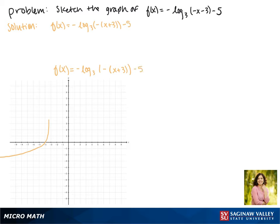Now since we're subtracting 5 on the outside, this shifts our function down 5 spaces. Now we're passing through the point negative 4, negative 5.